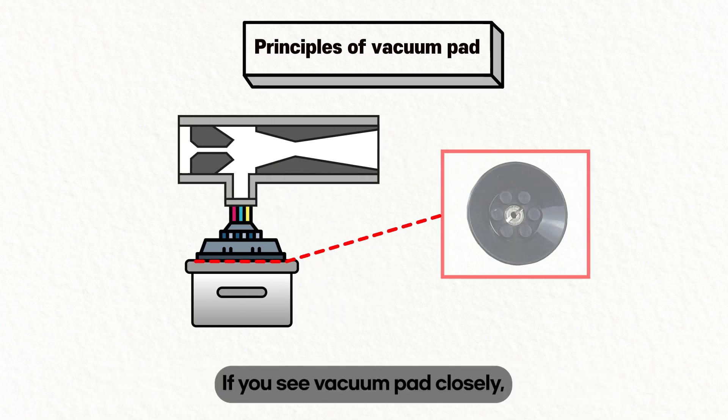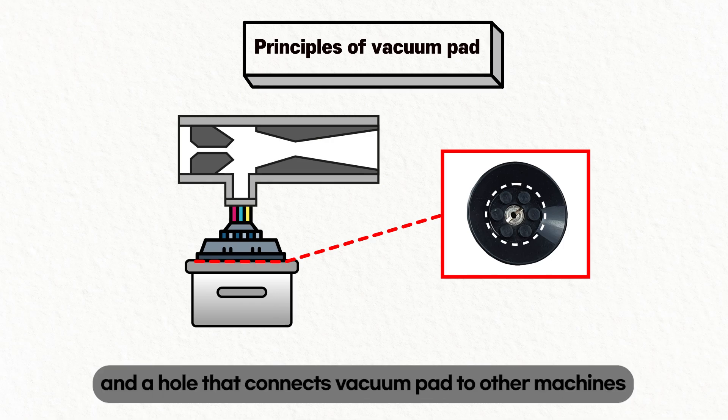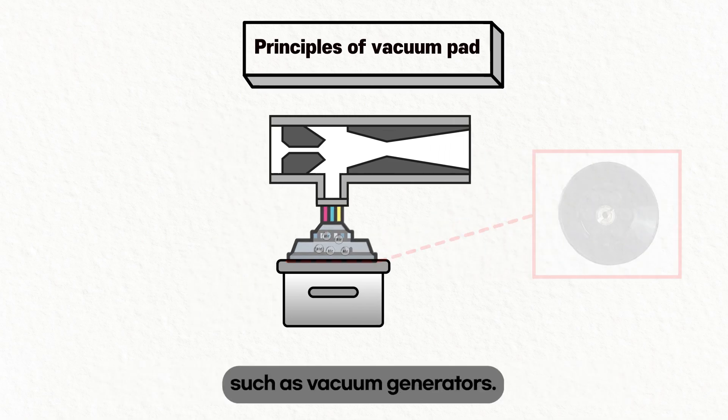If you see a vacuum pad closely, you can see an empty space inside and a hole that connects the vacuum pad to other machines such as vacuum generators.